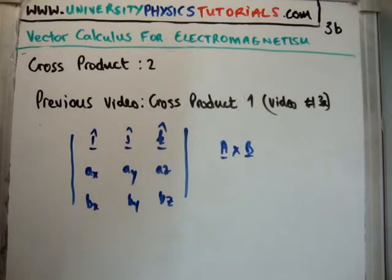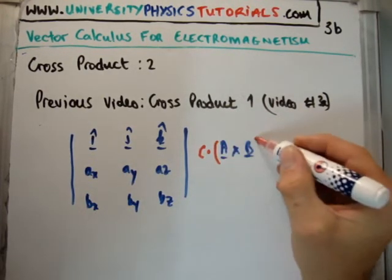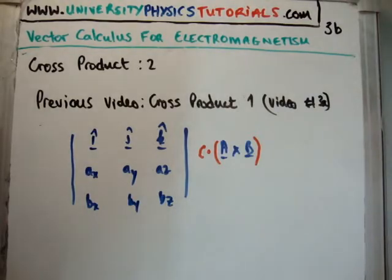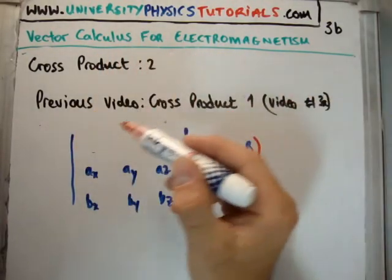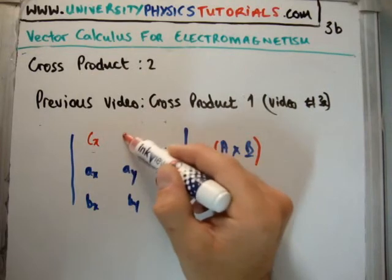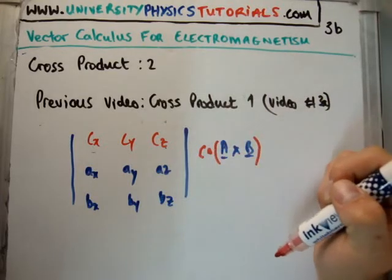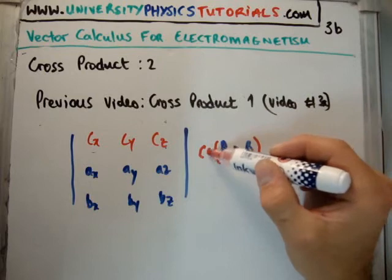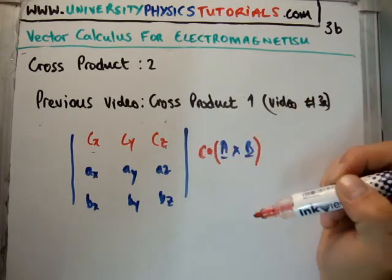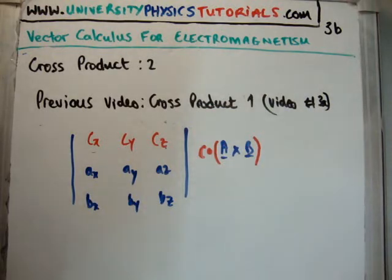Now what happens if, for example, we wanted to get C and we wanted to get the dot product of A cross B? Well how does it fit in here? Well it should make perfect sense that what we do is we just put C sub x, C sub y, and C sub z here. Note by the way, the dot product is always going to give you a scalar. So you do A cross B and you're going to get a vector, but you're going to get a scalar in the end anyway when you have C. So in this case you're just going to get the determinant of this particular 3 by 3 matrix.